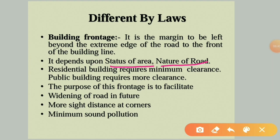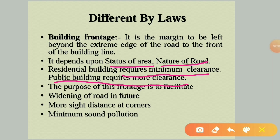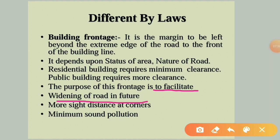Building frontage depends upon the status of the area and the nature of the road. If it is close to a town or in a rural area it may differ, and the width and type of road also affects the frontage. Residential buildings require a minimum clearance while public buildings require more clearance.